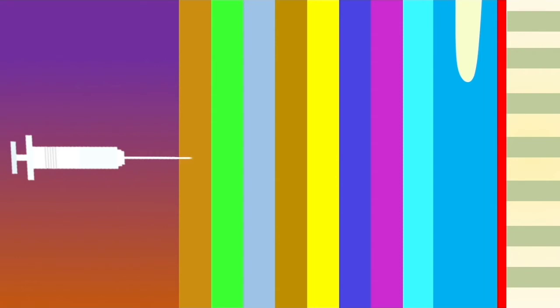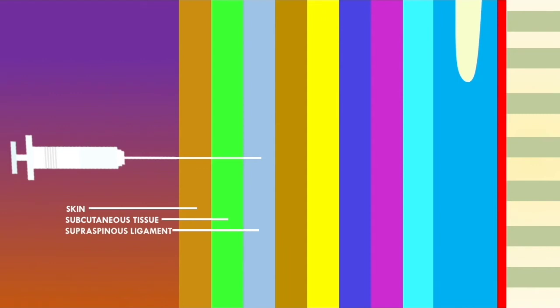Here we have a spinal needle, and we're going to talk through the different layers the spinal needle must go through before it reaches the area of the cerebrospinal fluid. The first layer that the needle must penetrate is the skin. As the needle is advanced further, it has now reached the subcutaneous tissue. Once advanced even further, the needle has now reached the supraspinous ligament.